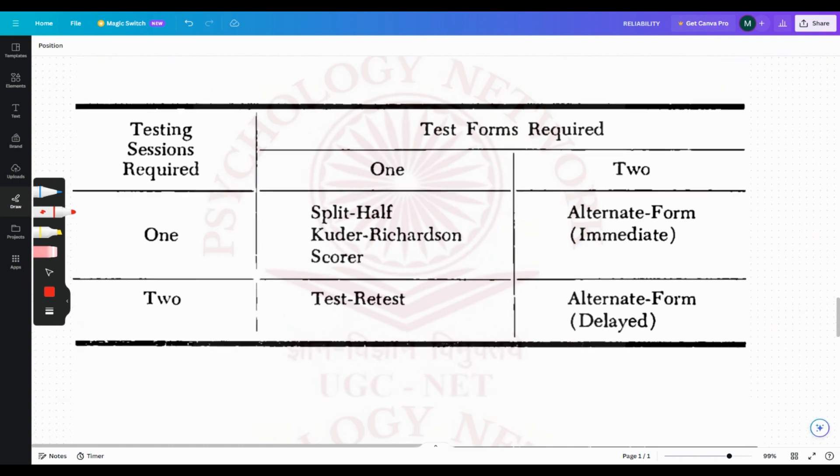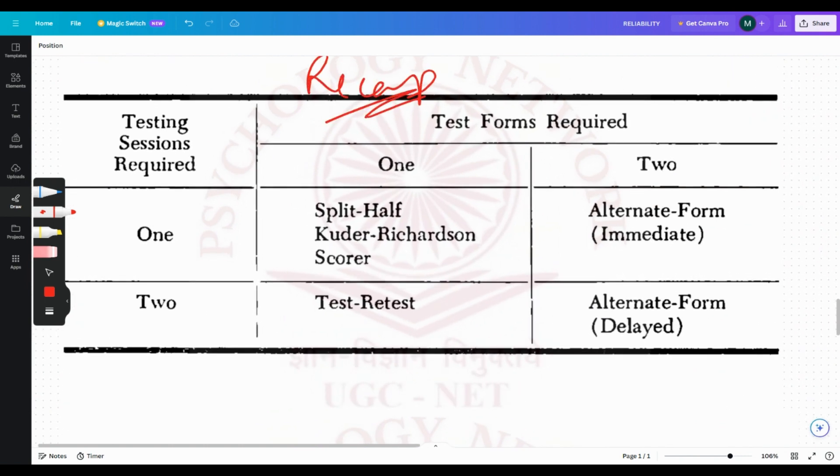Next, this is a recap. Testing sessions required, test forms required. Split-half and KR scorer would require only one session and one form. Test-retest would require two sessions but one form, because it's doing with the same form. Alternate form: if you are going to take two forms and do it immediately, then it would take one session and two forms. If doing it in two separate sessions, two forms and two sessions.